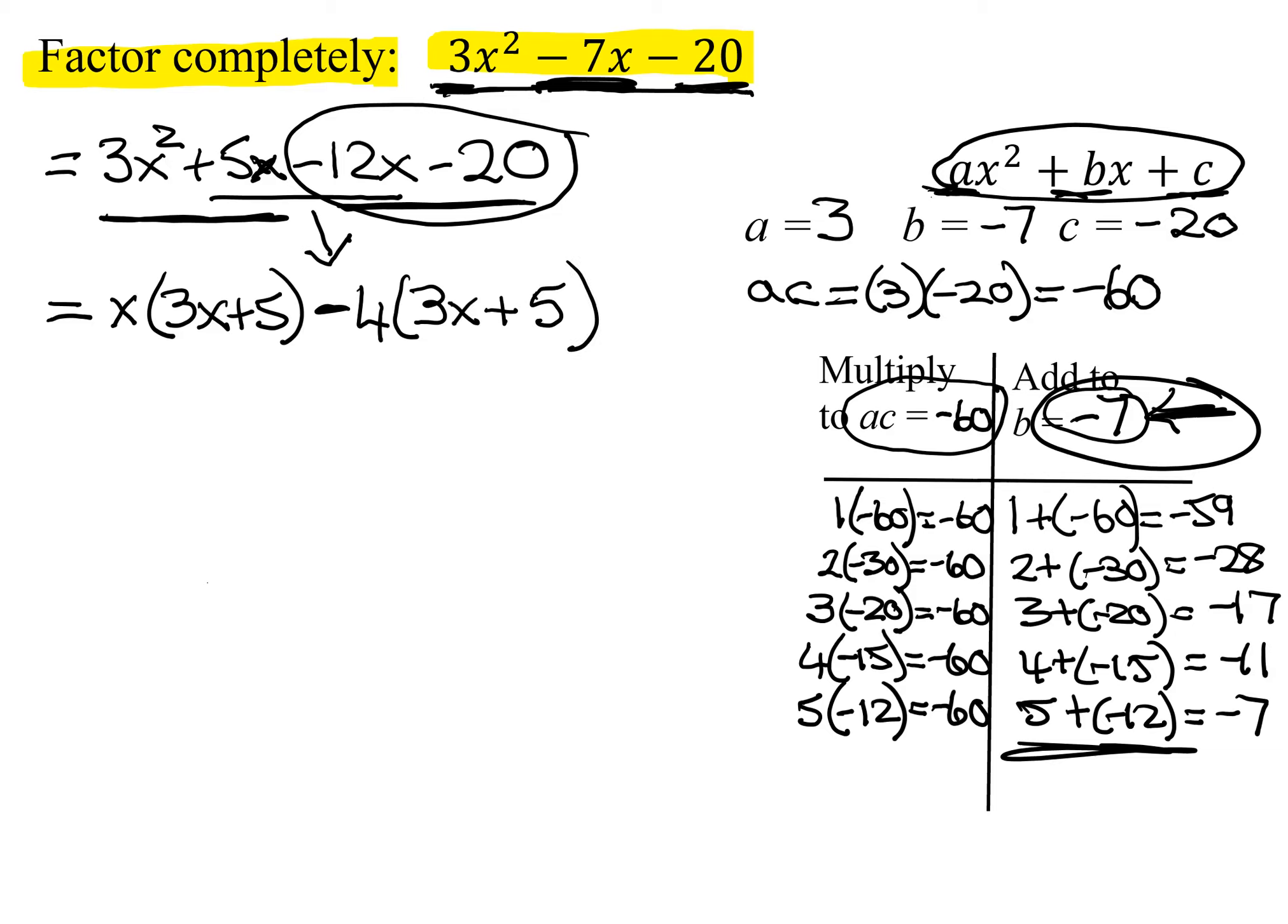Now kind of double check. Does negative 4 times 3x give me negative 12x? Yes. Does negative 4 times 5 give me negative 20? Yes. So now let's look at does this binomial, is that the same as this one? Yes. That is the common binomial I can pull in front. So I have my 3x plus 5 times what is remaining, x minus 4. So now I have factored my expression into these two binomials. And don't forget, you can check your answer by foiling it out.